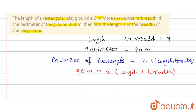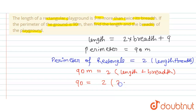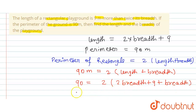We know that length equals 2 times breadth plus 9, so we substitute this value into the equation: 90 = 2 times of (2b + 9 + b).